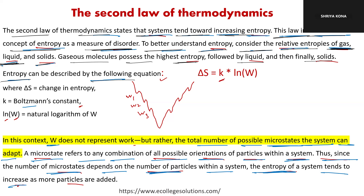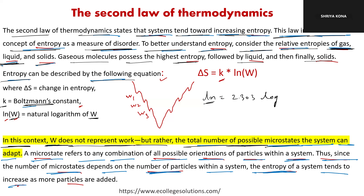Entropy can be described by the Boltzmann equation S equals k times ln W, where k is Boltzmann's constant and its value will be given in the question. In this context, W does not represent work — it is the total number of possible microstates the system can adopt.